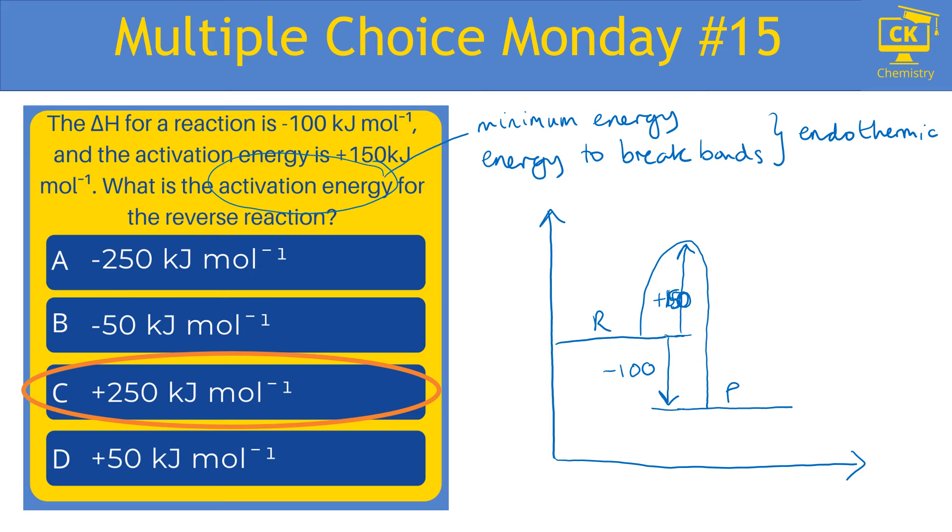Now, if we imagine we're going the opposite way, so this is talking about the reverse reaction, we're going from P to R. The activation energy, we're going to keep the same explanation. It is from the reactants, which is P, and it is going to the highest point.